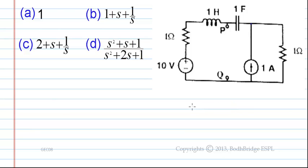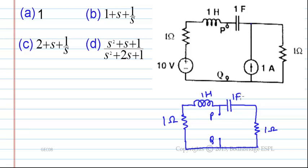Redrawing the circuit, we get the other components as they are and the voltage source and current source are replaced by short circuit and open circuit respectively.